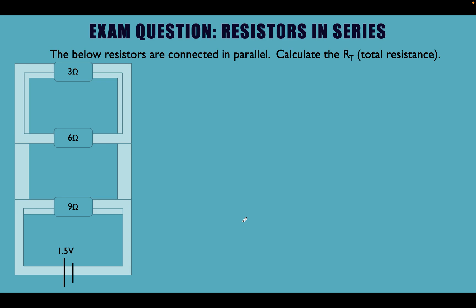Here's a question we might look at in an exam. We're being asked: the below resistors are connected in parallel. Calculate the resistance total. You might see it written as RT, which just means resistance total. So straight away, let's think about what formula we need in order to calculate the total resistance in a parallel circuit. The formula is: 1 over RT equals 1 over R1 plus 1 over R2 plus 1 over R3 — or however many resistors we've got. There could be more, like a fourth with 1 over R4.